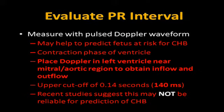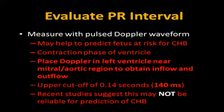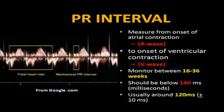To evaluate PR intervals, you measure with a pulse Doppler waveform — it may help predict fetuses at risk for congenital heart block. You're looking at the contraction phase of the ventricle, placing your Doppler right in the left ventricle near the mitral-aortic region, obtaining both inflow and outflow information. The upper cutoff is 140 milliseconds. Recent studies suggest it isn't as predictive for heart block as we thought, and treatment is a little controversial.